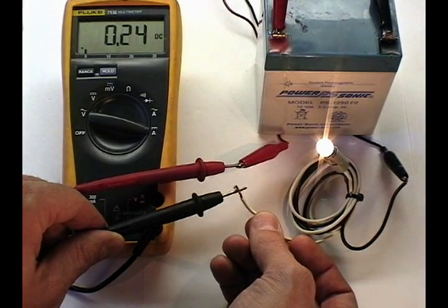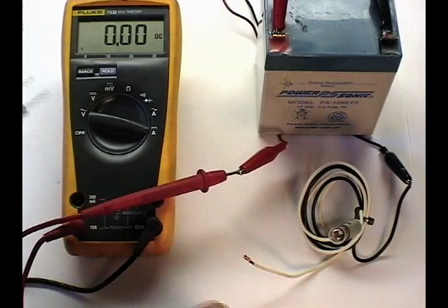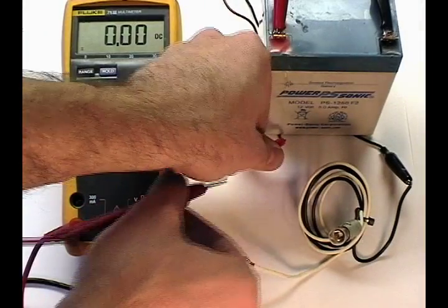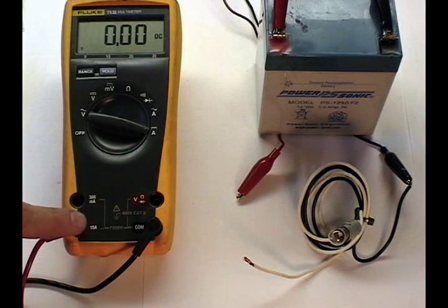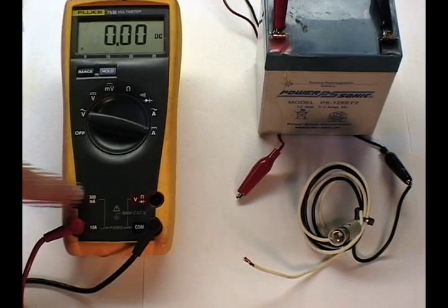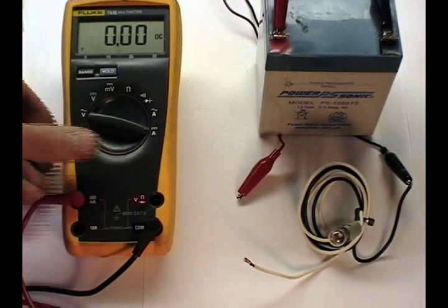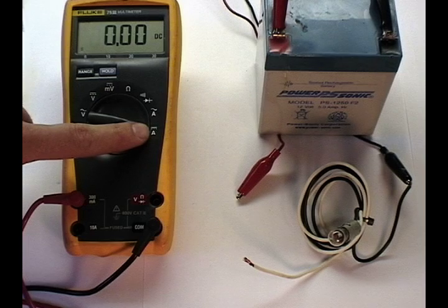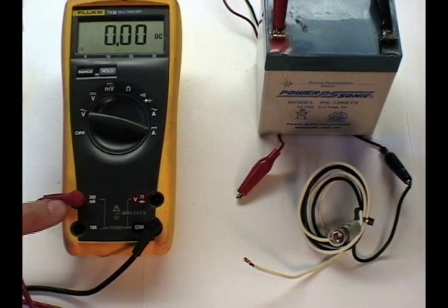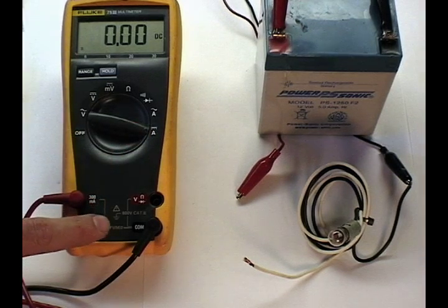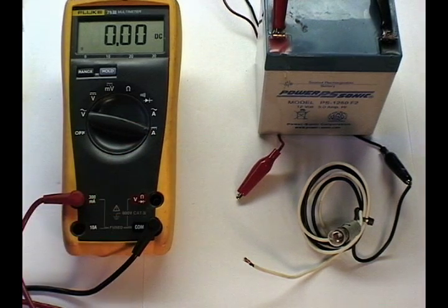In this case we're measuring 0.24 amps, which is within the 300 milliamp limit of the second fused input on the meter. We'll replace the red terminal from the 10 amp to the 300 milliamp input. This allows greater resolution when measuring the current flow through the circuit.